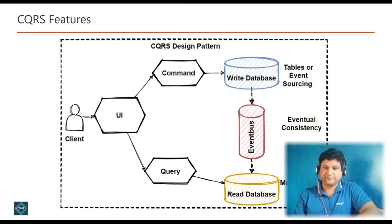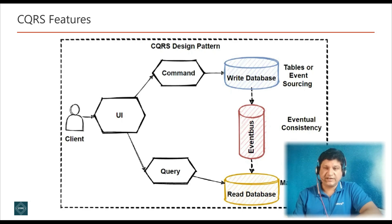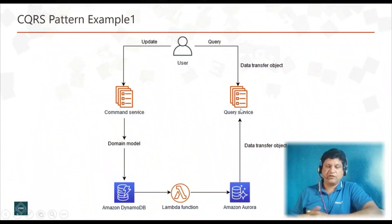When we separate the read and write databases, we need to keep them in sync. We can sync the two databases using event-driven architecture: when something is updated in the write database, it publishes an update event via a message broker, which is then consumed by the read database to sync data. However, this creates a consistency issue because of async communication. CQRS is mostly used with the event sourcing pattern — this is called eventual consistency, where the read database eventually synchronizes with the write database.